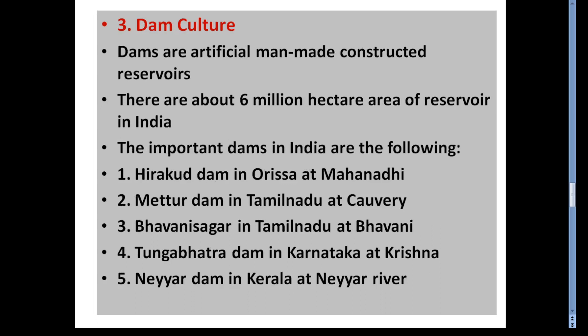The third type is dam culture. Dams are artificial, manmade constructed reservoirs. There are about 6 million hectares of reservoir area in India. The important dams in India are: Hirakud Dam in Orissa at Mahanadi, Mettur Dam in Tamil Nadu at Kaveri, Bhavani Sagar in Tamil Nadu at Bhavani, Tungabhadra Dam in Karnataka at Krishna, and Nayar Dam in Kerala at Nayar River.